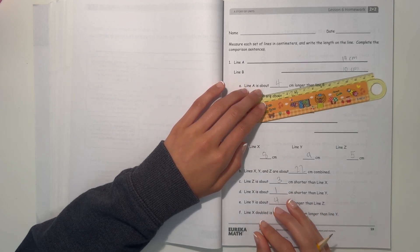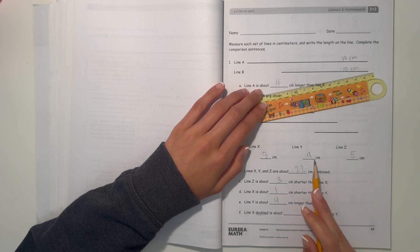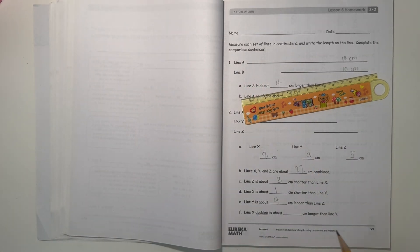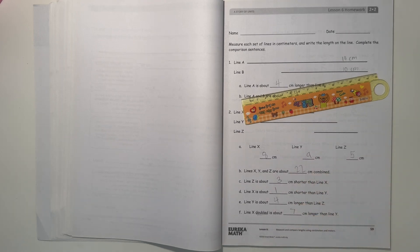Now it says line X doubled is about how much longer than line Y. So doubled means like times 2. So 8 plus 8 is 16. So 16 is 7 more than line Y. So when line X gets doubled, it's 7 more than line Y.